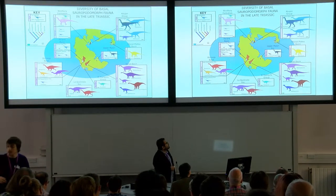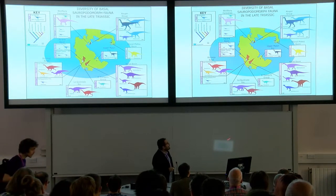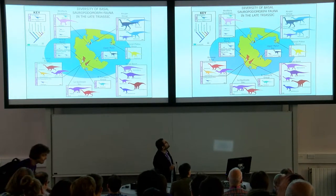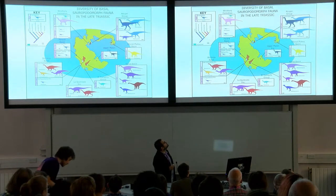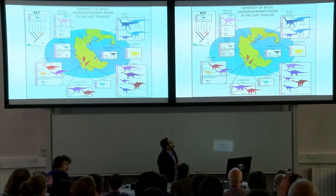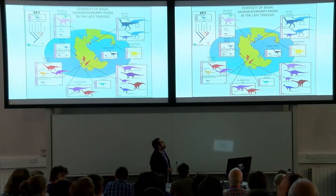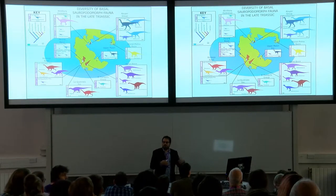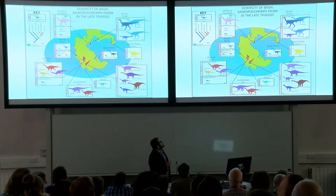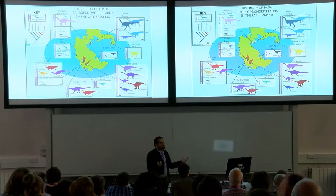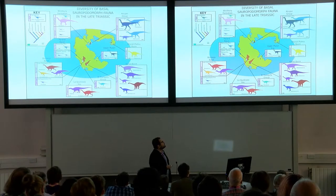Here you have a map that shows the localities where they have been found in the late Triassic, and you can see how there is a large range of sizes and stances. The neck morphology and the tail morphology is different from all of them.